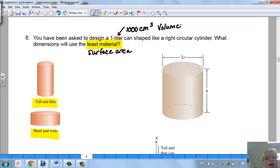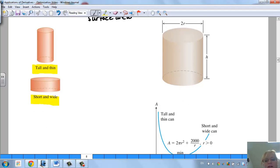They want you to have a one liter can and they're giving you that you have to have that. So that is going to be our constraint and they want to have the least material.